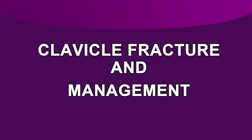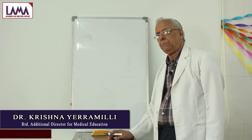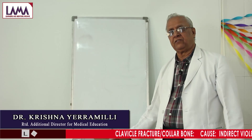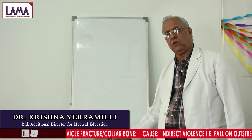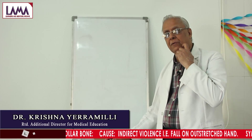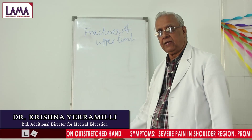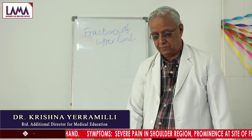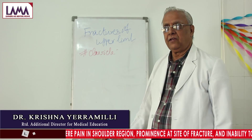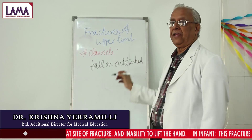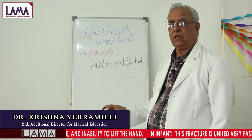We are going to take up individual fractures, because each fracture has its own way of management depending upon the type of fracture, whether there is any accompanying injury, dislocation along the fracture, or loss of skin. We will talk about the injuries of the upper limb first, starting with fracture of the clavicle or collar bone. Most fractured clavicles occur due to indirect violence — a fall on outstretched hand — and also from direct injuries in motor vehicle accidents.